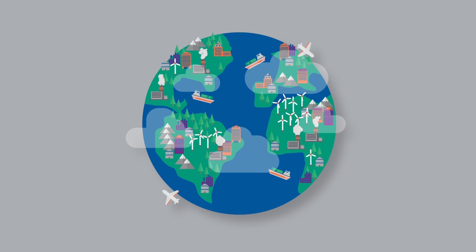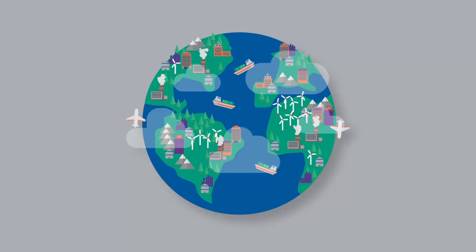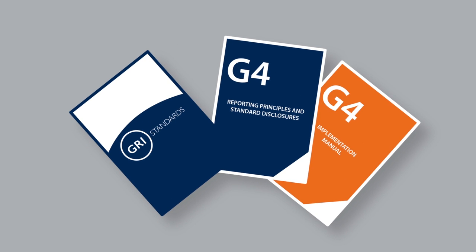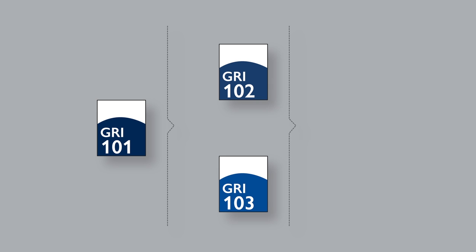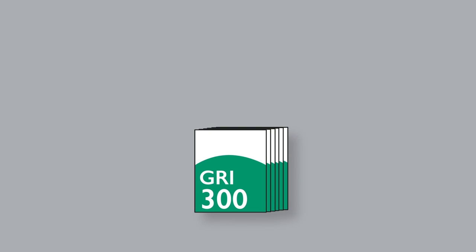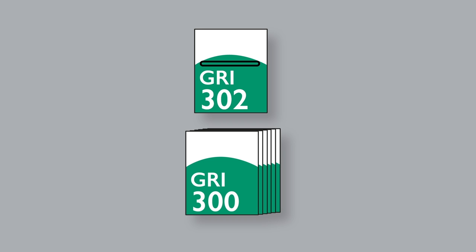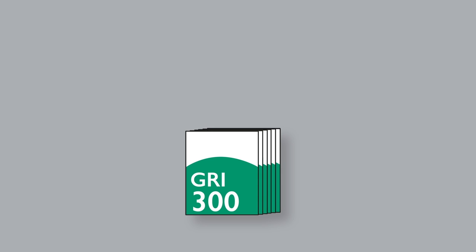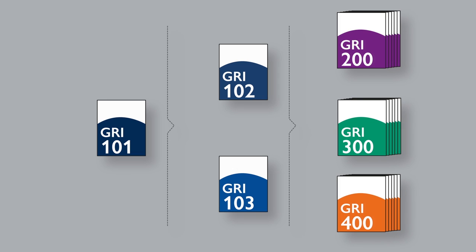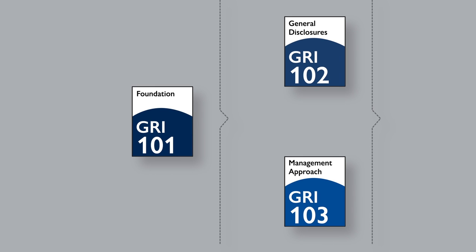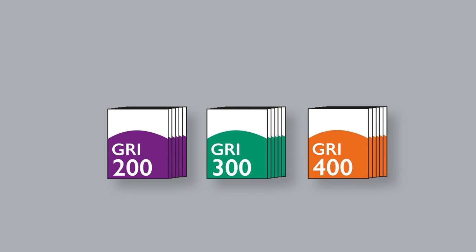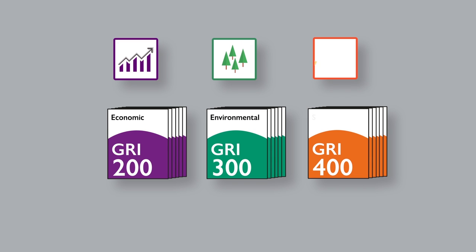The GRI sustainability reporting standards are the first global standards for sustainability reporting, and the latest evolution of GRI's original sustainability reporting guidelines. The content has been restructured into a set of modular, interrelated standards. This new modular structure means standards can be updated independently or new ones can be added without revising the whole set. There are three universal standards used by every organization that makes a sustainability report, and there are three series of topic-specific standards which cover economic, environmental, and social impacts.